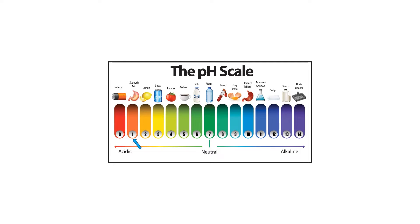A pH of 1 is considered very acidic. A pH of 14 is considered very basic or alkaline, and a pH of 7 is considered neutral. Any solution below a pH of 7 is considered acidic and any solution above a pH of 7 is considered basic or alkaline. Lowering the pH makes the solution more acidic; raising the pH makes the solution more basic.